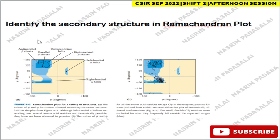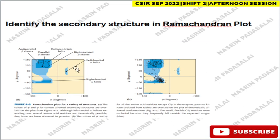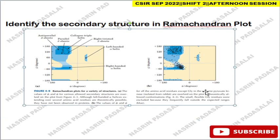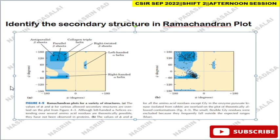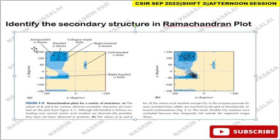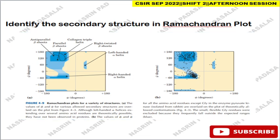Next, identify the secondary structures in the Ramachandran plot. I picked this particular picture from my Lehninger. You should know where the beta sheets are lying and where the alpha helices are lying based on the values of phi (φ) and psi (ψ) angles. With this diagram, it will be very helpful for you — just understand where the helix region is running.